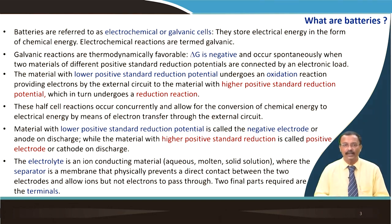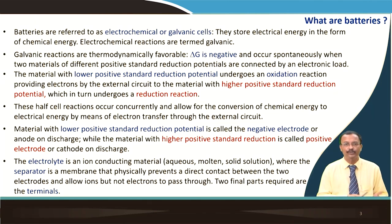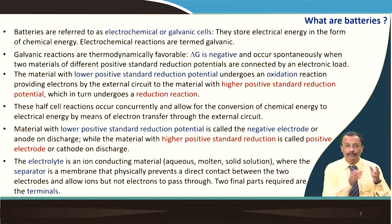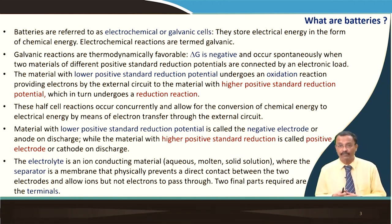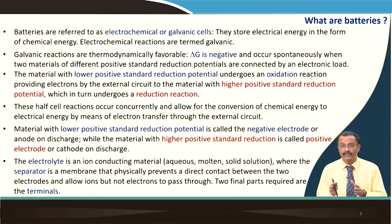The electron flow does work on the external load. The material with lower positive standard reduction potential is called the negative electrode or anode on discharge, while the material with higher positive standard reduction potential is called the positive electrode or cathode on discharge. I am stressing the term 'discharge' because once you charge it, this is just reversed — as I tabulated in the last lecture.